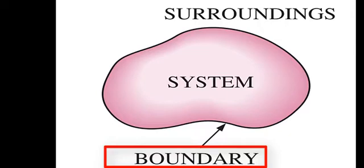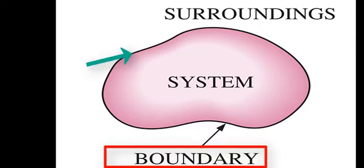The real or imaginary surface that separates the system from its surroundings is called the boundary. The boundary of the system can be fixed or movable.